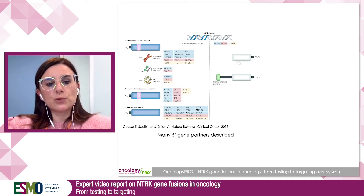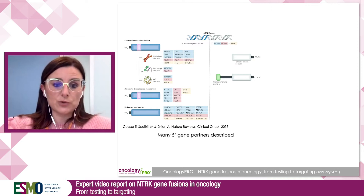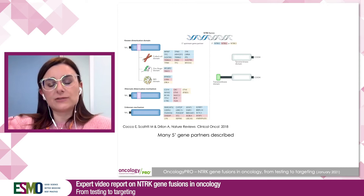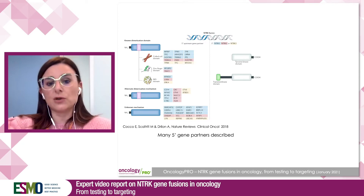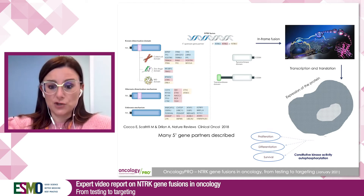Malignancies can harbor NTRK gene fusions. When we talk about gene fusions, we talk about chimeric genes. In the specific setting of NTRK gene fusions, the 3-prime portion of the NTRK genes is juxtaposed to the 5-prime portion of another gene. We say that NTRK genes are promiscuous because when they form these chimeric genes, they can have different partners — more than 80 partners have been described so far — and these fusion genes have been shown to have oncogenic properties.